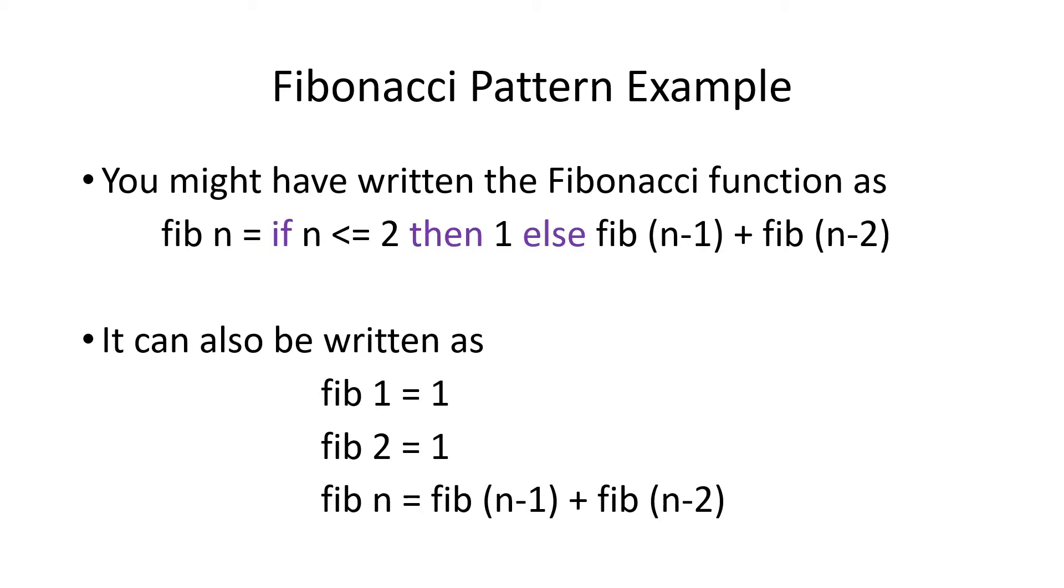Here's an example using the ever-famous Fibonacci example. Here I've written the Fibonacci in the simplified version of one line with the if and the else statement. But you can also write it in a simplified version at the bottom where instead of putting n as the parameter, we put fib 1. Fibonacci of 1 and Fibonacci of 2 are 1. So we have two lines for that. And then we have the Fibonacci of n. We don't have to worry about the if and else statement because you've already defined the Fibonacci of 1 and 2 above.